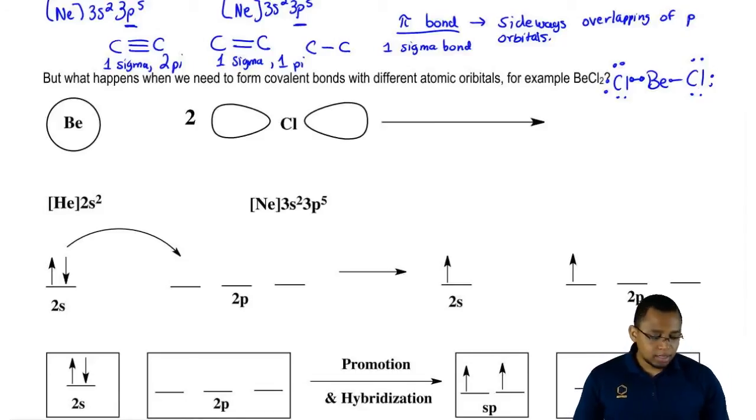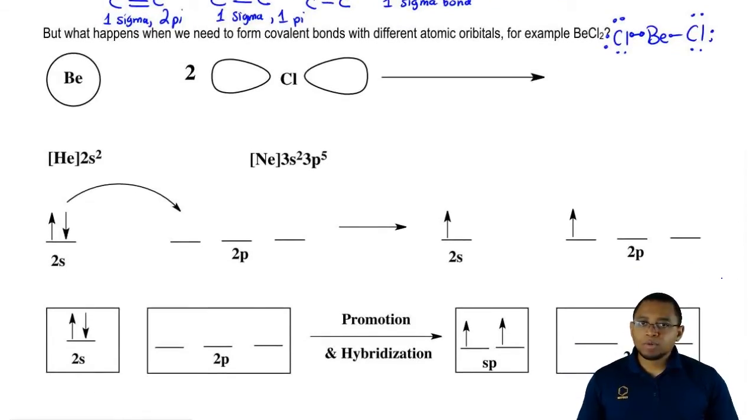But the problem here is the electron configuration of beryllium is [He]2s2, and that of chlorine is [Ne]3s2 3p5. Here's the thing. An s and a p cannot mix together. They're different atomic orbitals. They have to both be the same letter for them to successfully mix.